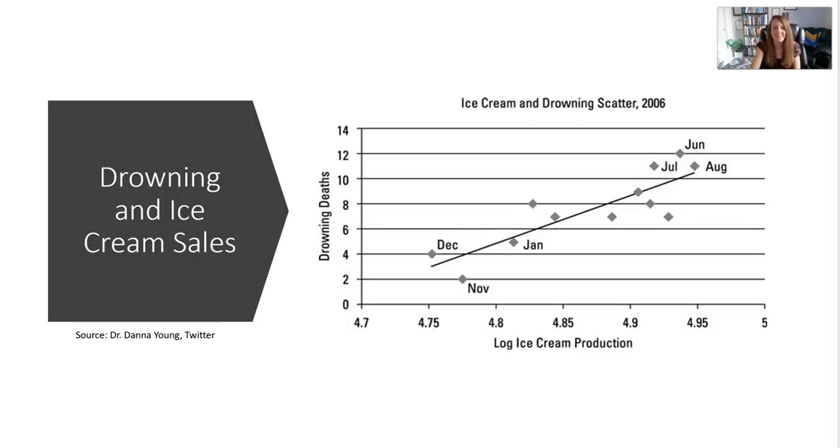Let's move to this classic example of drowning in ice cream sales. You can see in this graph here that as ice cream production ramps up, the number of drownings in the U.S. also increases. So could we then therefore conclude that ice cream causes people to drown?